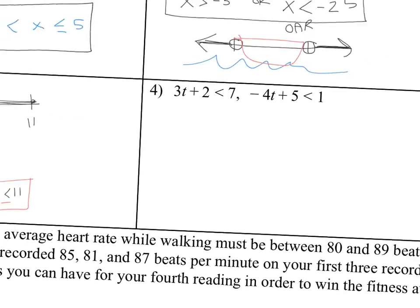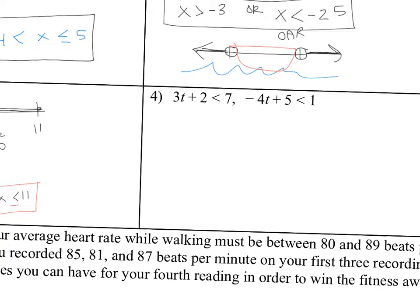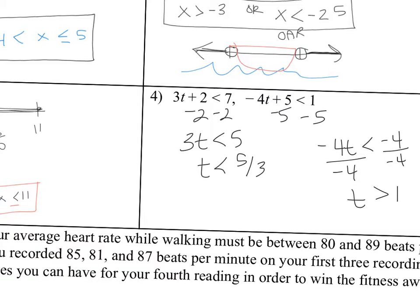Okay, number 4. I'm going to solve each of these separately. So it's t is less than 5 thirds. I'll solve this one separately. So it's negative 4t is less than negative 4. So it's t is greater than 1. So I have t is less than 5 thirds, or and.